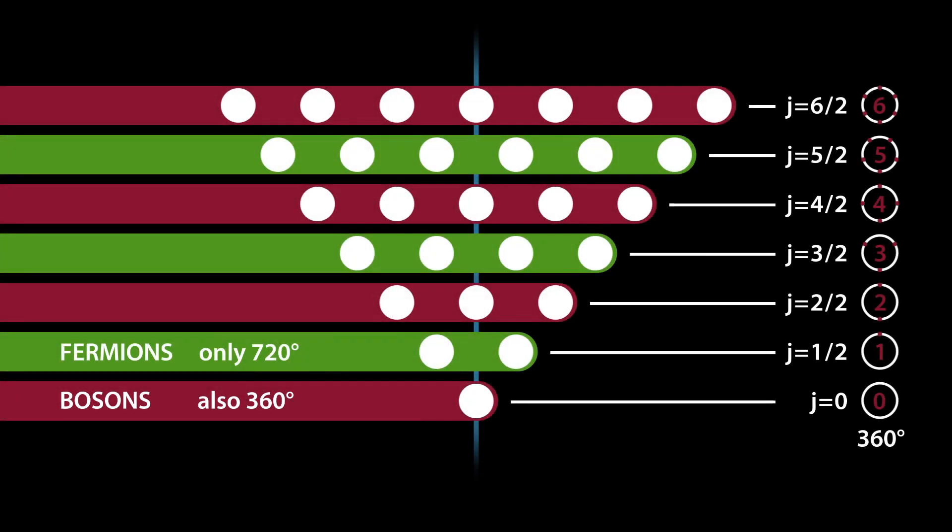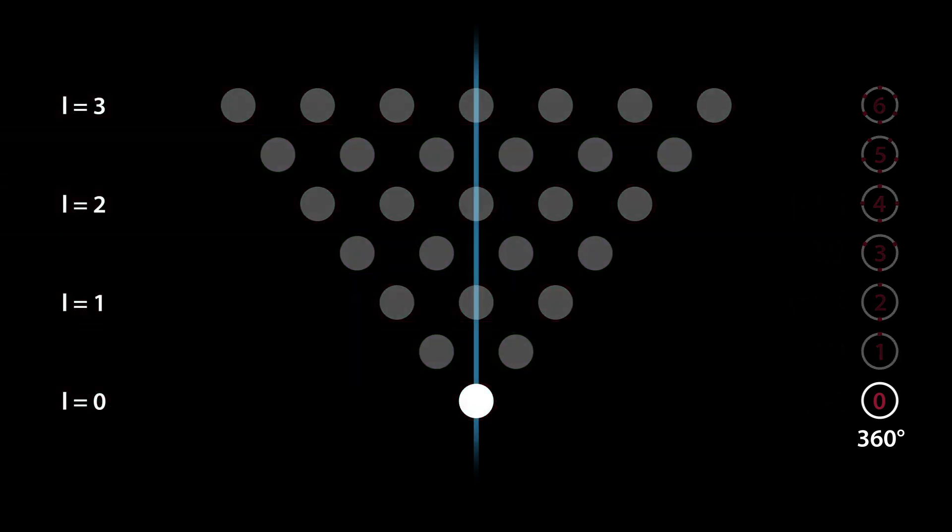In order to better understand the difference between bosons and fermions, we will now take a look at the complex phase. We will begin with the simplest state, namely J equals zero.